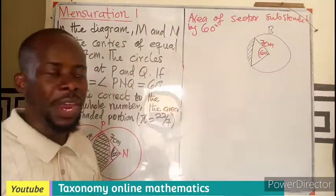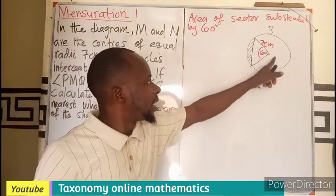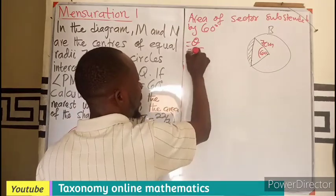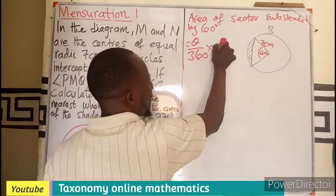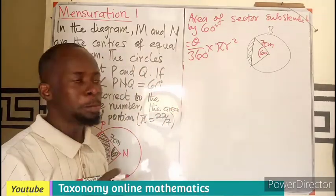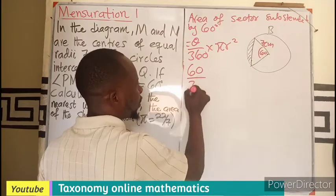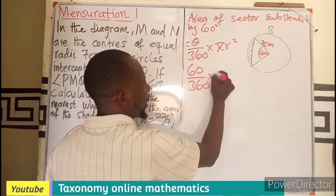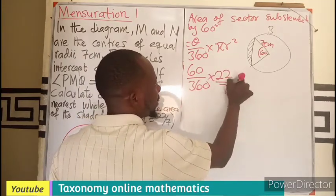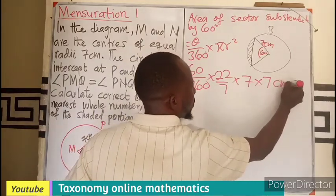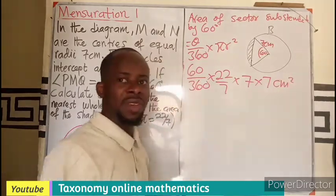You first will find the area of the sector, the complete sector, which we know is given as θ/360 times πr². And θ is given as 60 degrees. π is 22/7. The radius is 7 times 7.